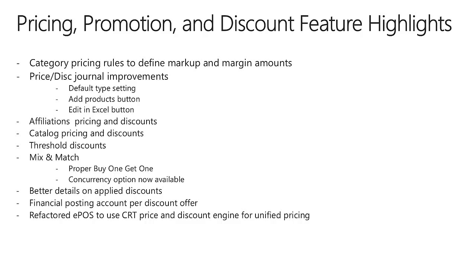We are now saving a lot more details for the discounts in the Retail Transaction Discount Trans table. This is important for customer orders. Previously, when you had a manual discount and a line discount and you recalled the order, you'd see only one discount and the total would display. The amount is correct, but we lose the detail. Now in AX 2012 R3, we see the detail of the two discounts, and since we're saving the extra discount data in the Retail Transaction Discount Trans table, we'll be able to report on that detail.